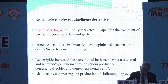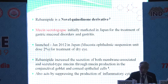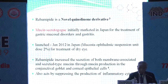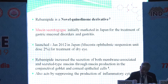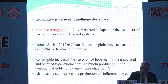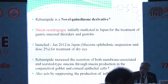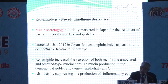There were many newer drugs that address directly the etiology of dry eye, not just improving symptoms. Rebamipide was one such novel quinolyl derivative. It is a mucin secretagogue initially marketed in Japan for the management of gastric mucosal diseases like gastric ulcers, and was launched in Japan in 2012 for the treatment of dry eye.